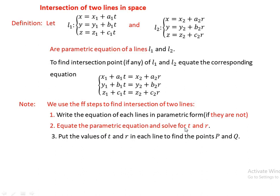If we substitute the value of t into L1, we get the point P with coordinates (x, y, z). If we substitute the value of r into L2, we get the point Q with coordinates (x, y, z).